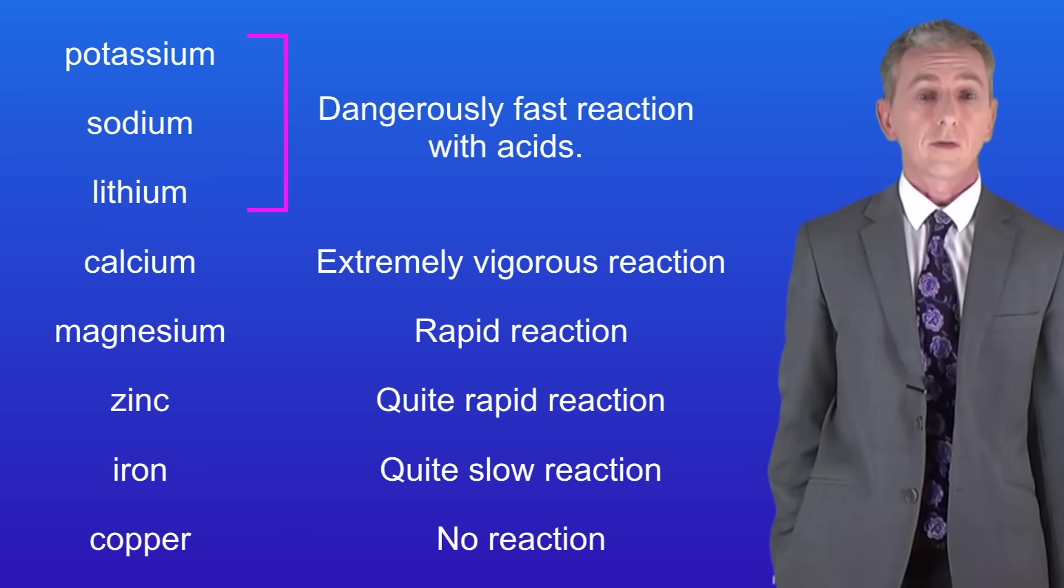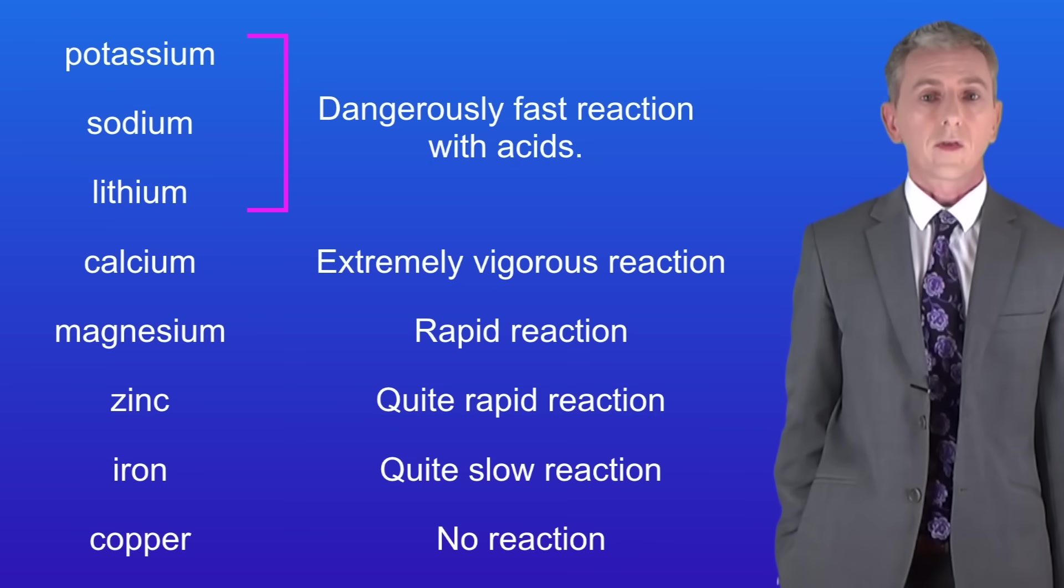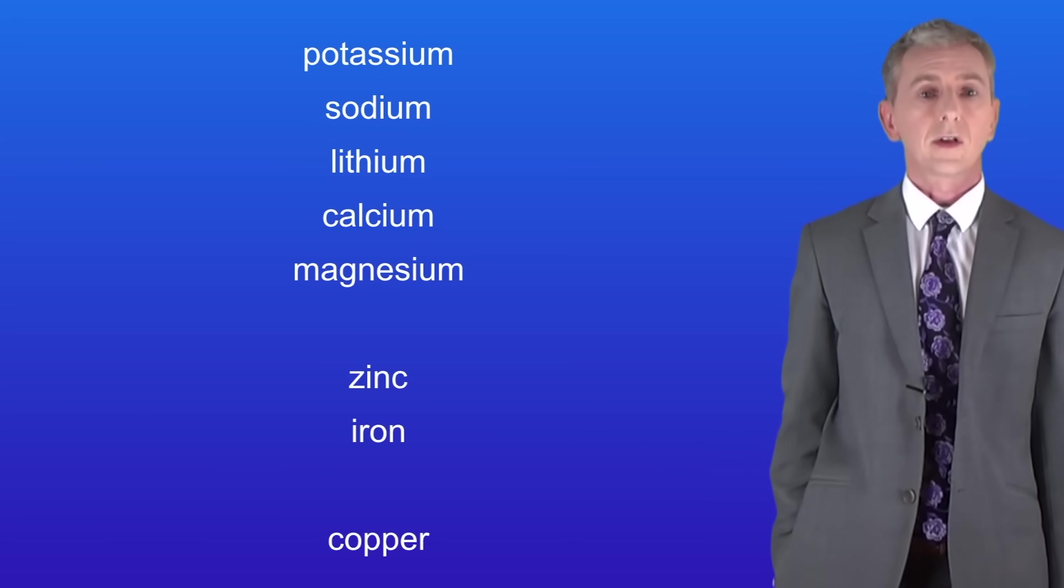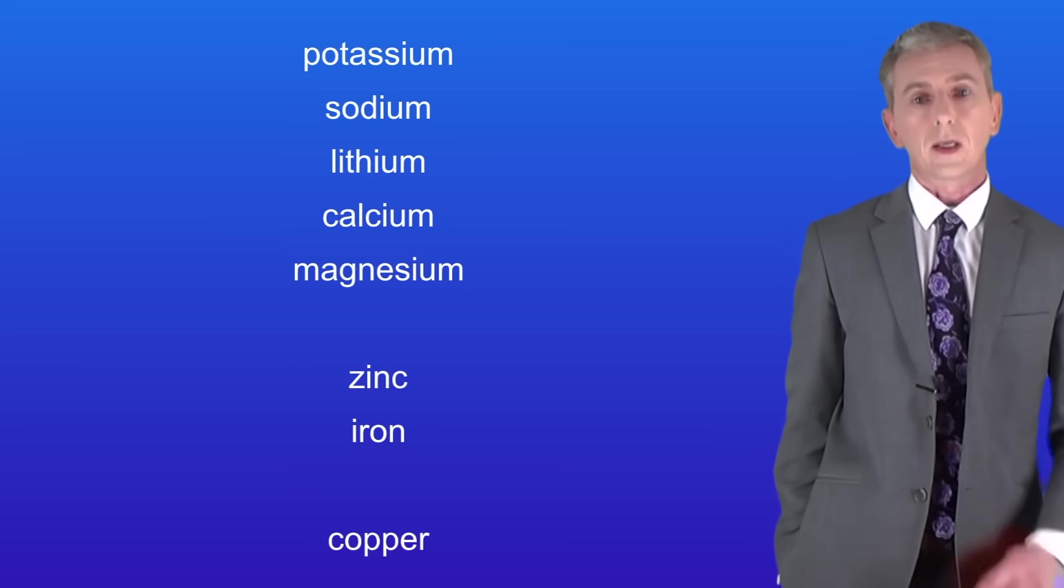So what we've created here is called the reactivity series for metals and we're going to be using this a lot in the next video. Now scientists usually include two non-metals in the reactivity series because they're used a lot in chemistry and these are carbon and hydrogen. I'm showing you these here.